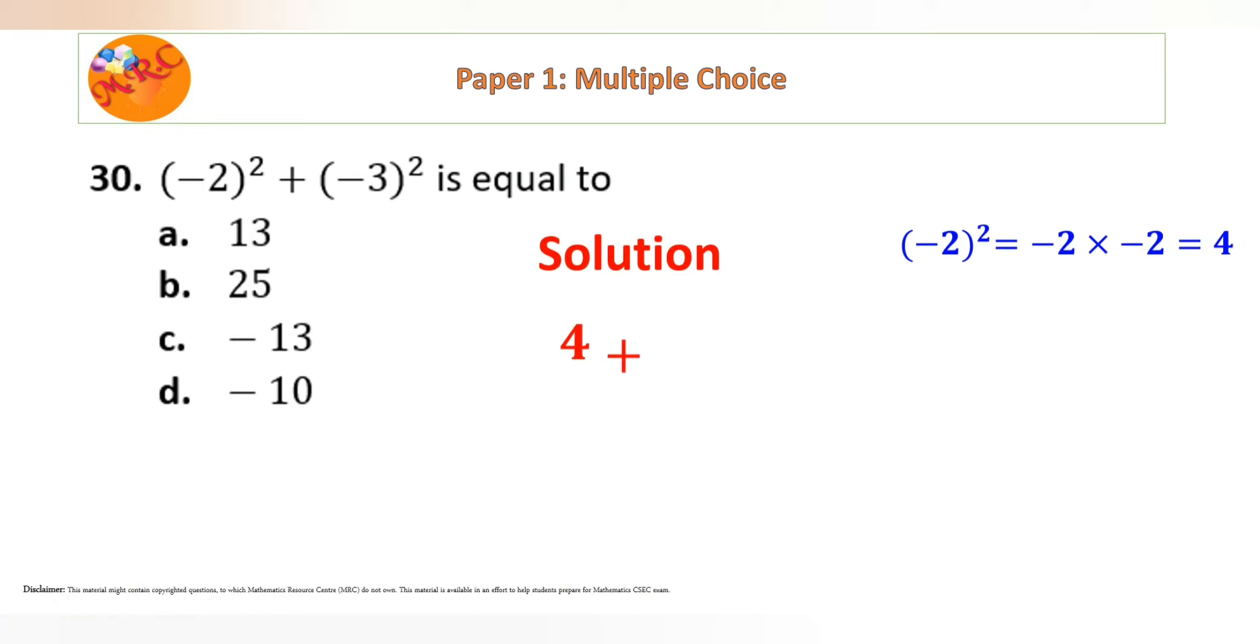Then plus, because plus is here, negative 3 squared. What is negative 3 squared? It's negative 3 times negative 3, which gives 9. So that is just going to be 4 plus 9, which is 13.